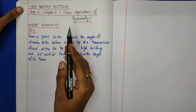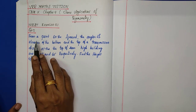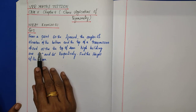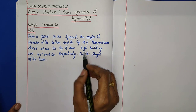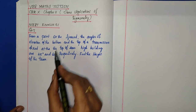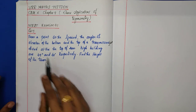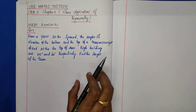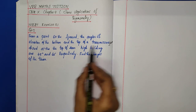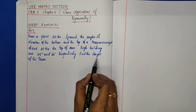NCRT Exercise 9.1, Chapter: Some Applications of Trigonometry, Question Number 7. From a point on the ground, the angle of elevation of the bottom and top of a transmission tower fixed at the top of a 20 meter high building are 45 degrees and 60 degrees respectively. Find the height of the tower.